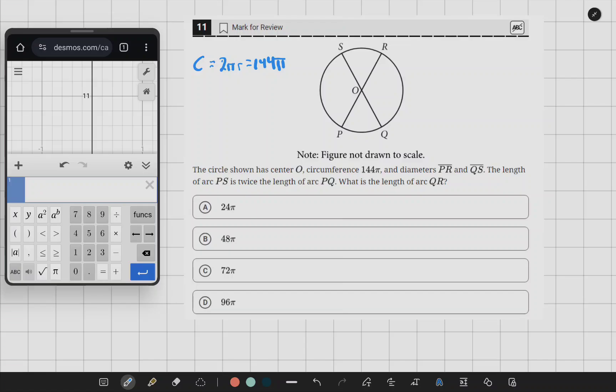We have the diameters PR and QS. We know that they go directly through the center, which tells us that the measure around each one of these, the angle, is going to be 180 degrees or π.